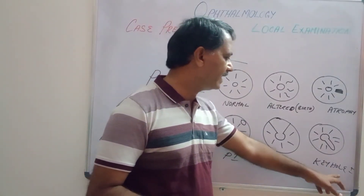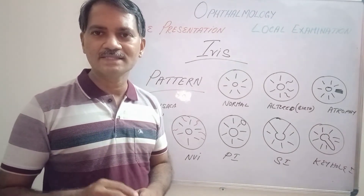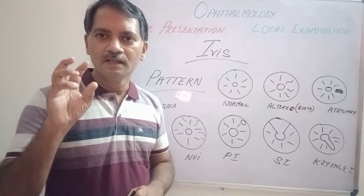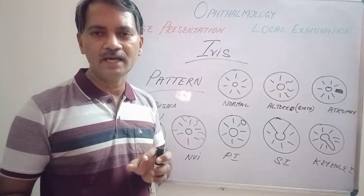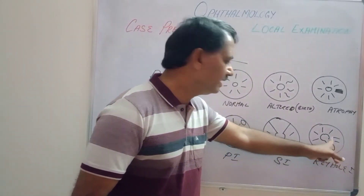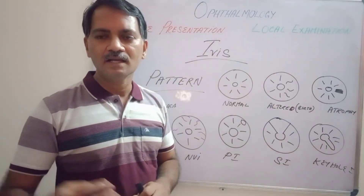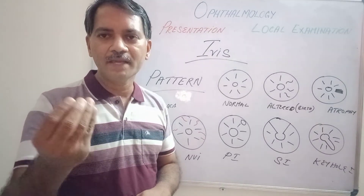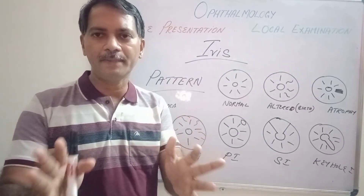The next thing is keyhole iridectomy. Keyhole iridectomies are done when there is a central corneal opacity. The pupil and the opacity are on the same line so that light cannot pass into the eye to give vision. In that case, a cut is made in the inferior and nasal portion of the iris in a T-hole shape so that some amount of light can enter through the inferior and medial portion and the patient will have some useful vision. These are some examples of abnormal pattern in the iris.